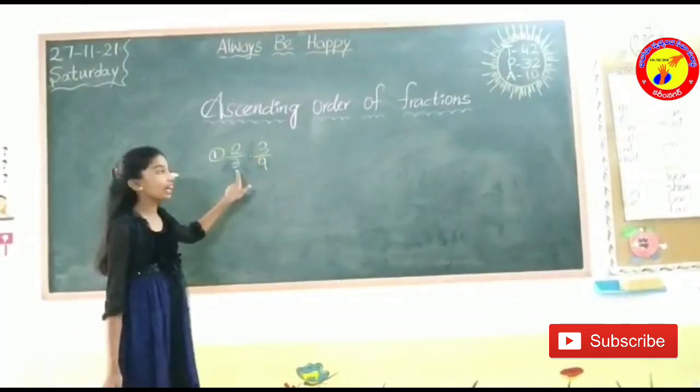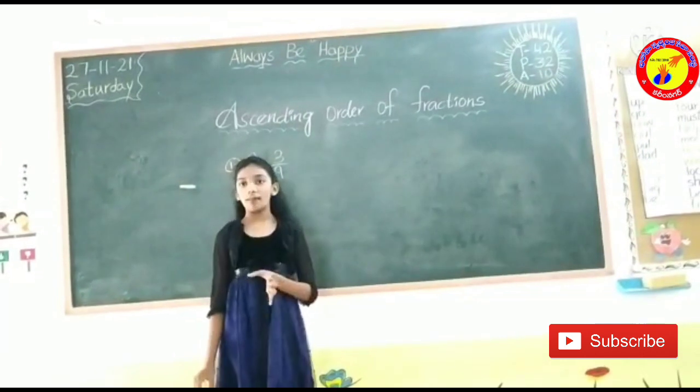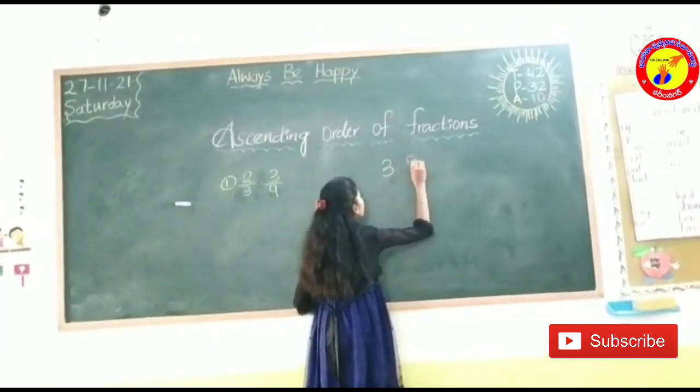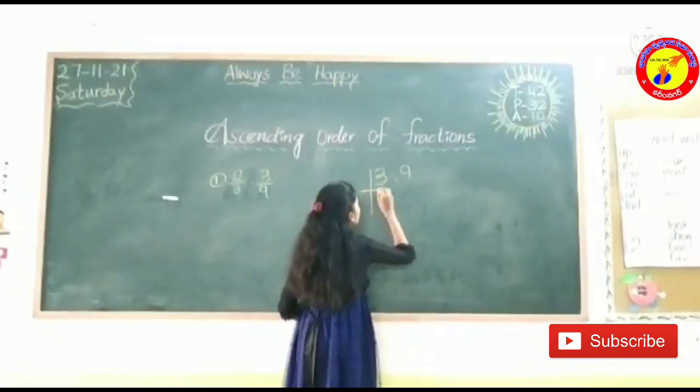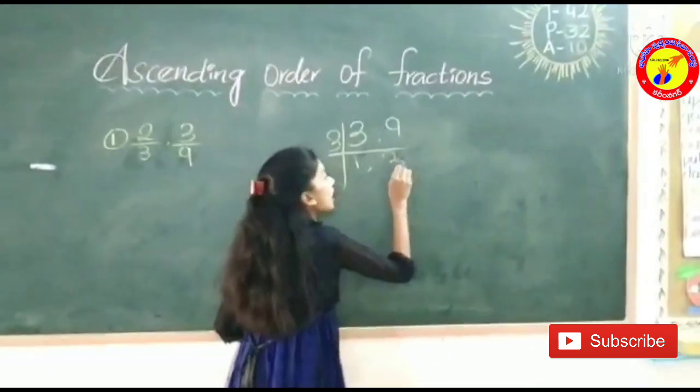Now let us find 3 and 9 LCM. LCM is least common multiple. Now 3 1s are 3, 3 3s are 9.